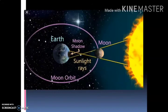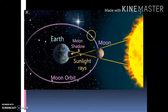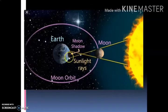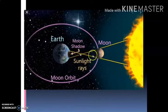यहाँ पे भी आप देख सकते हो बच्चो — same photo है। Sun है और Moon जो है वो Earth के around revolve कर रहा है। यहाँ पे Moon जो है Sun की light को block करके Moon's shadow — चंद्रमा की shadow — यहाँ पे पड़ती है। और यह देखिए Sun rays, सूरज की किरणें आ रही थीं जिसे Moon ने बीच में रोक लिया है।